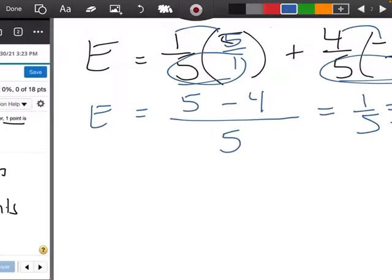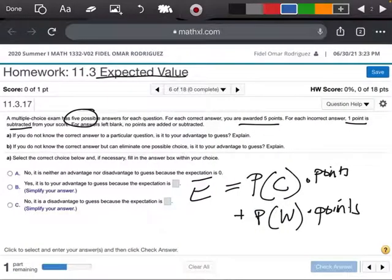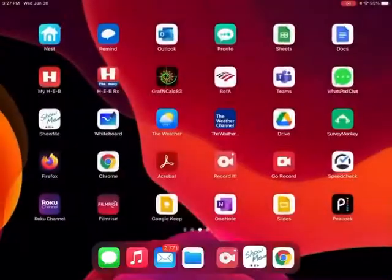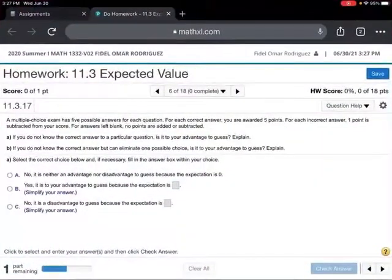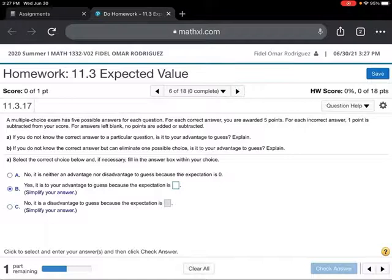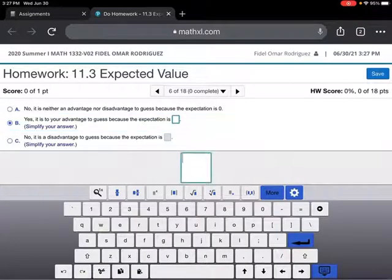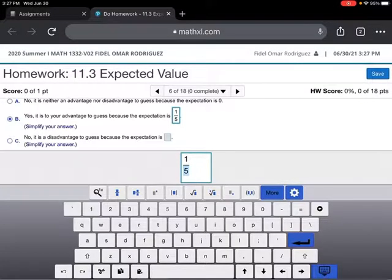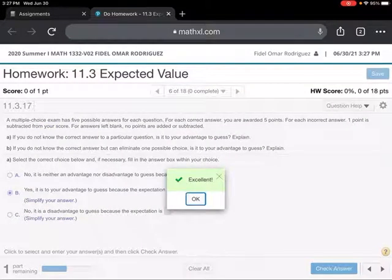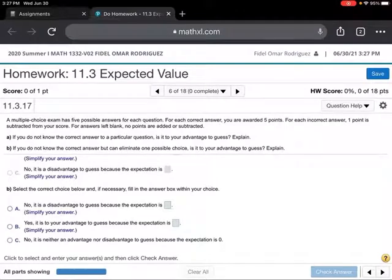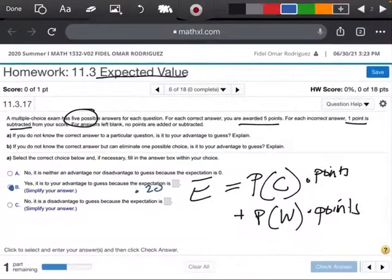So when I come back over here, is it our advantage to guess or not guess? It is going to be advantage to guess because the expectation is going to be a positive 0.20, right? So look, what I'm going to do is I'm going to come back over here, and I'm going to say yes. And it looks like they're actually asking me to write a fraction. So I think as a fraction, we ended up with one-fifth. So let me do that, and we got it. Now, let's do the second part. Here we go.